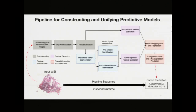The pipeline I eventually constructed for assessing tumor proliferation consisted of four primary components: pre-processing, feature identification, feature extraction, and overall clustering and prediction. In this presentation I'll be diving into each of these steps in more detail. They're all colored in different colors, as you can see here.